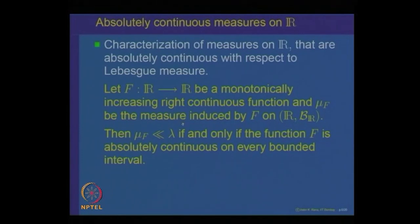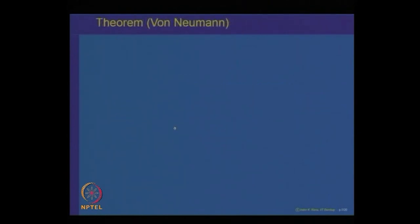This completes the proof of the theorem: mu_F is absolutely continuous with respect to lambda if and only if the function F is absolutely continuous on every bounded interval. This completely characterizes and ties up the notion of absolutely continuous measures on the real line with respect to Lebesgue measure with absolutely continuous functions on the real line. Next, we want to prove a theorem called the von Neumann theorem, which uses very intelligently the fact that the dual of L^2 of a measure space is itself — the Riesz Representation Theorem, namely that if T is a continuous linear functional on L^2 of a measure space, then it is essentially given by the inner product.